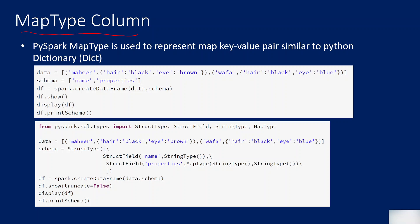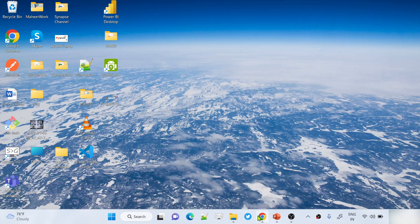Map type is nothing but a dictionary type in Python. If you know Python, you know what a dictionary is — a dictionary is basically like JSON. It has an opening curly bracket, then a key, then a value, then another key and another value. This kind of key-value pair data is used as a dictionary in Python. If you want that same dictionary type as a column in a PySpark data frame, you have to use map type.